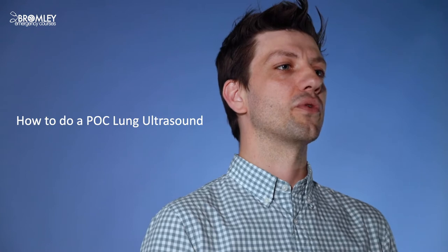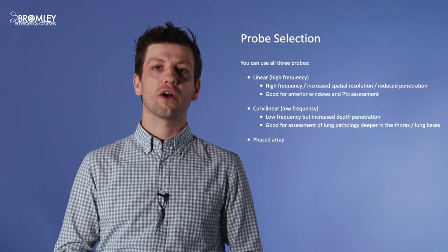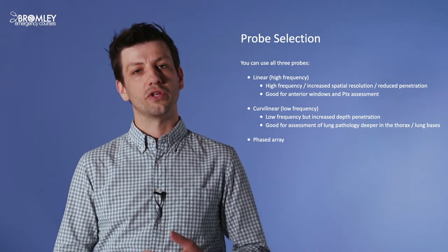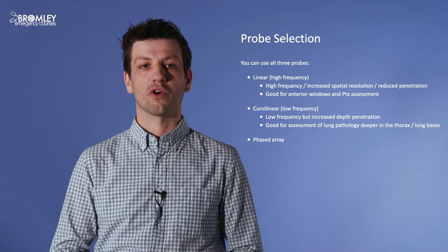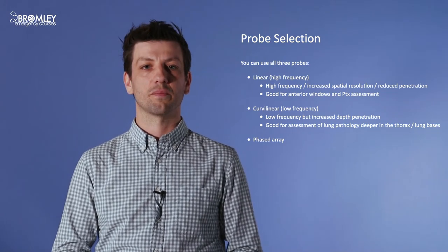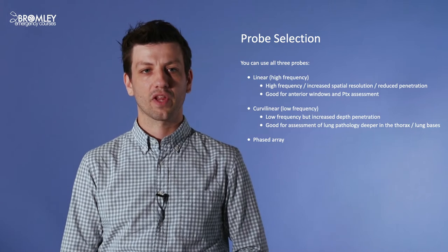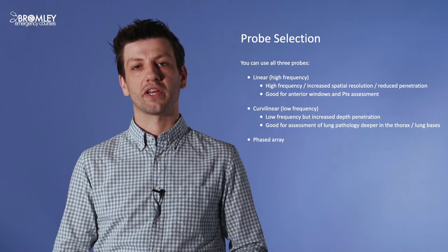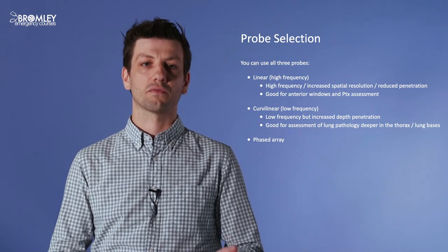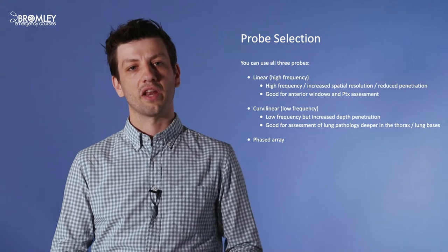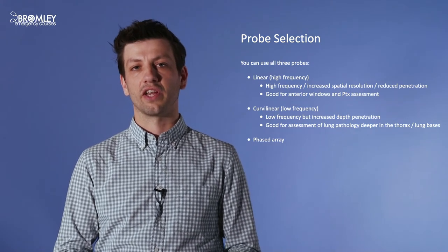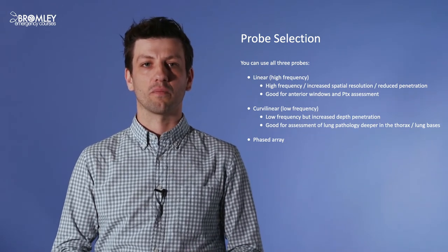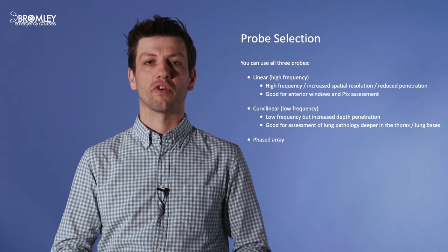Practically, how do we do a lung ultrasound? You can use all three probes: the high frequency linear probe, the curvilinear low frequency probe, or even the phased array probe typically used for echocardiography. The linear probe increases resolution but has reduced penetration. In my experience, the curvilinear probe is most suitable — it looks at the deeper parts of the lung as well as the pleural line and the more peripheral parts.